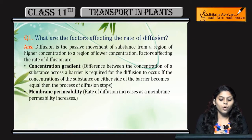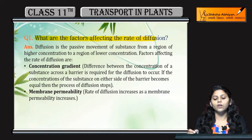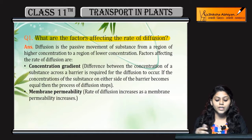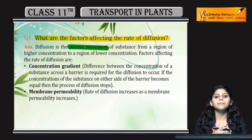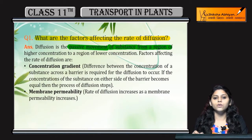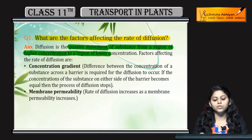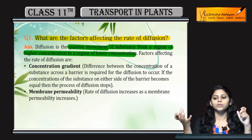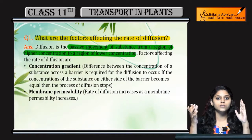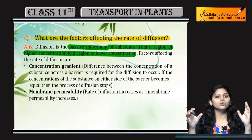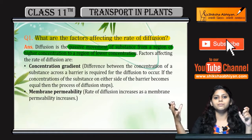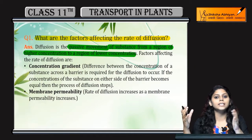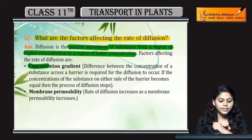The very first question is: what are the factors affecting the rate of diffusion? Diffusion is the passive movement — passive means without any energy requirement — of a substance from a region of higher concentration to a region of lower concentration. For example, if you spray perfume from one side, the concentration is higher there and lower further away, so movement occurs from higher to lower concentration — this is diffusion.